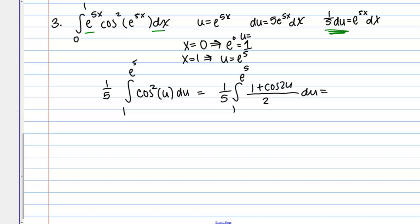Now, I see that I have a factor of 1 half, so I could pull that out front and have a 1 over 5 and a 1 half out front, and then a 1 plus cosine 2u inside.